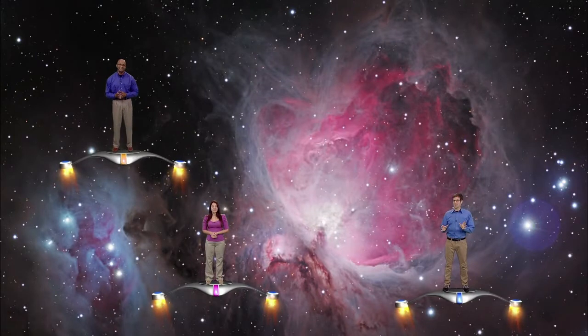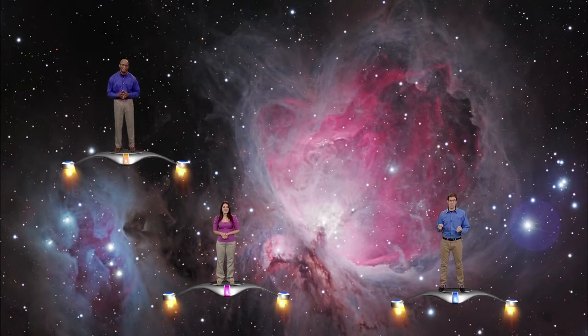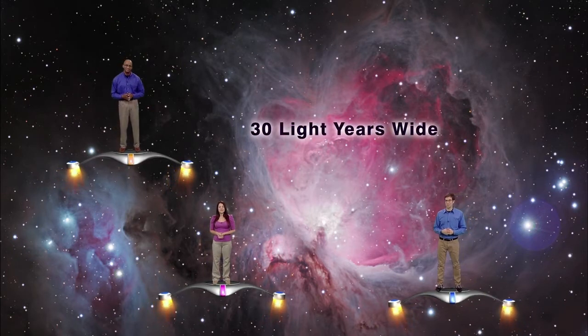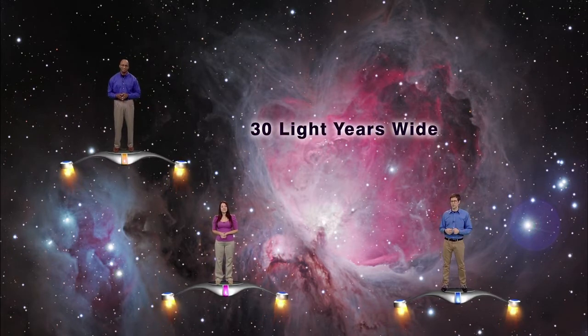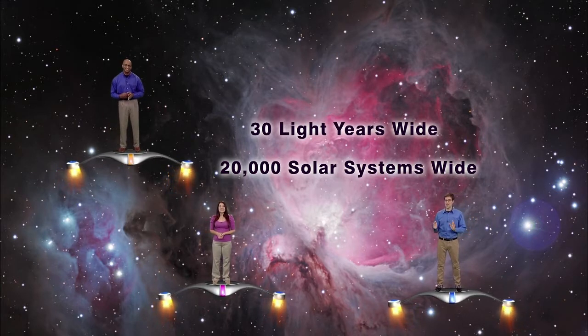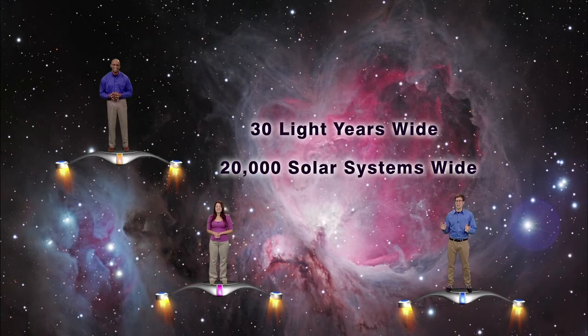But the Orion Nebula is so wide that if you were to travel at the speed of light from one side of the nebula to the other, it would take you almost 30 years to get there. When compared to the size of our solar system, it would take 20,000 of our solar systems lined up end to end to reach from one edge of the nebula to the other.